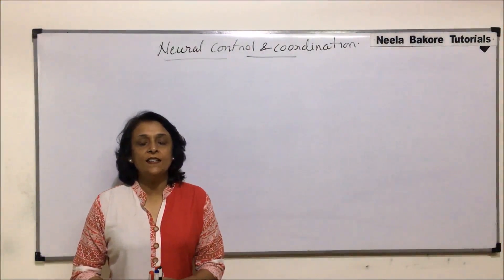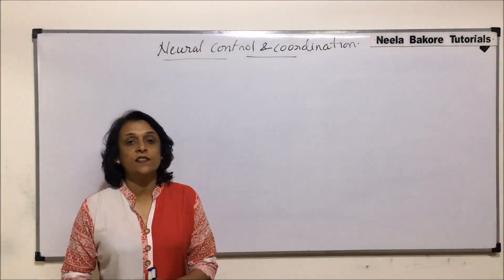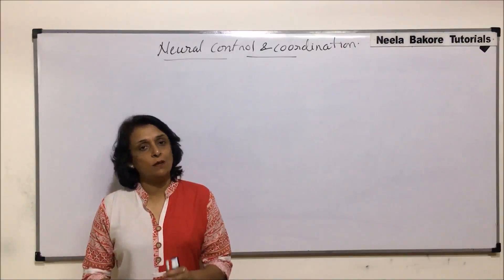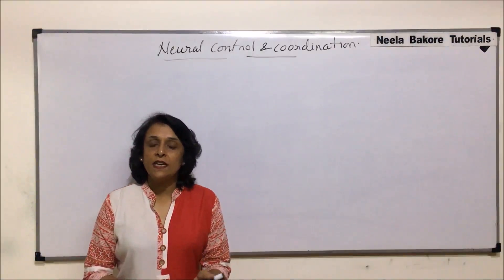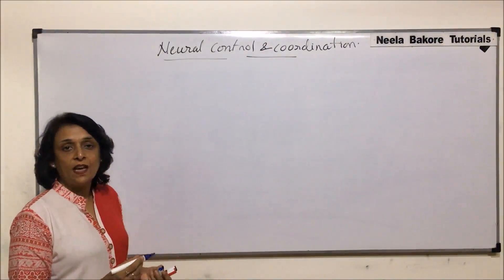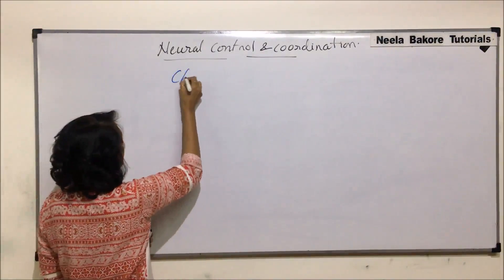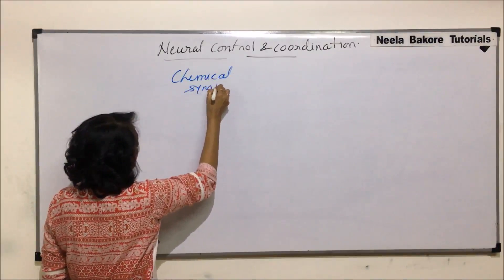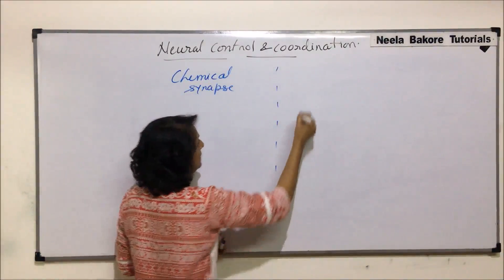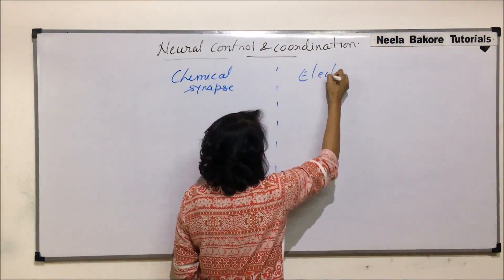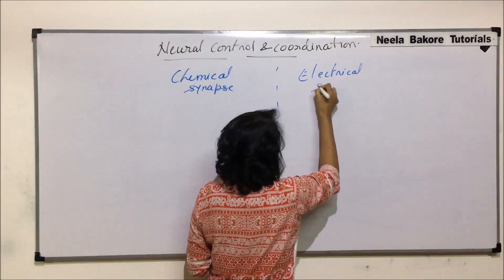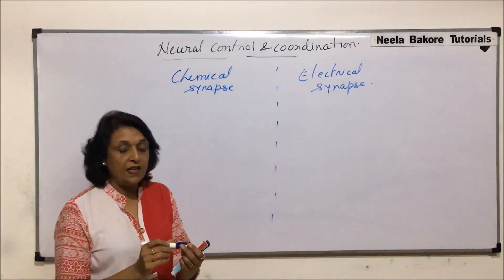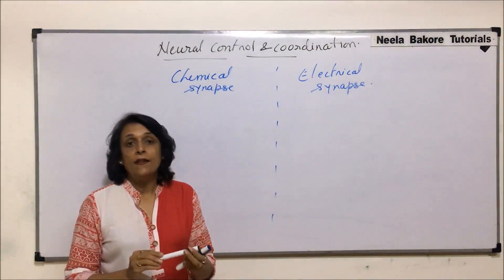We have already seen the structure of the synapse — the chemical synapse — and the conduction of impulse through chemical synapse. Now we will take a comparison between chemical synapse and electrical synapse. The basic difference between these two is the gap, that is the synaptic cleft.